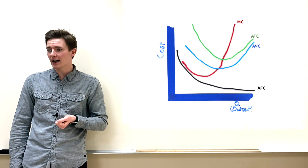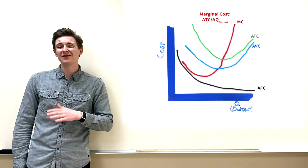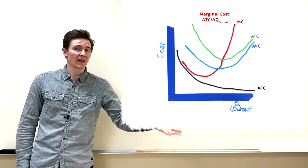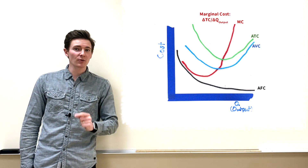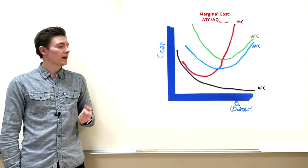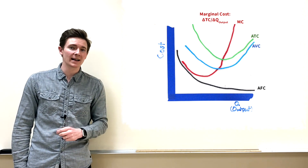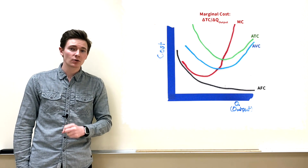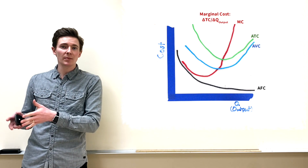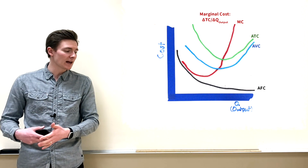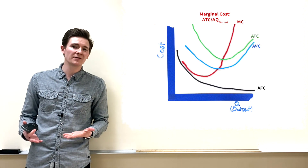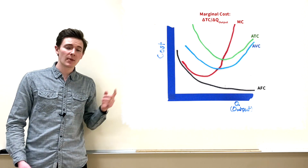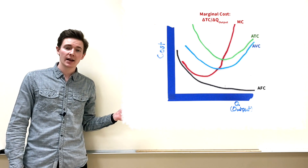Then we add marginal cost, which is your change in total cost divided by your change in quantity of output. There are rules: marginal cost must cross average variable cost at AVC's minimum, and must cross average total cost at ATC's minimum. The book uses GPA as an analogy — if your cumulative GPA is 3.0 and this semester you get a 2.5, your marginal GPA is below average, which lowers your average.